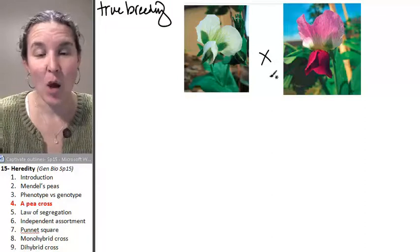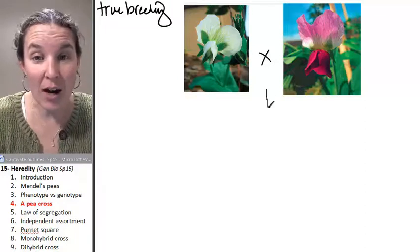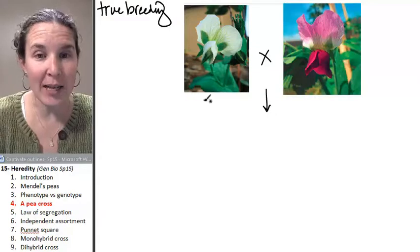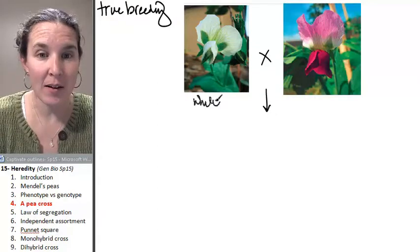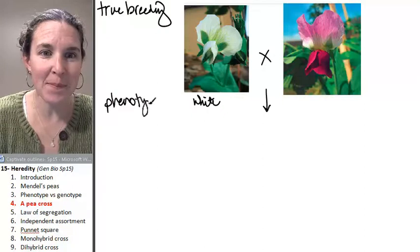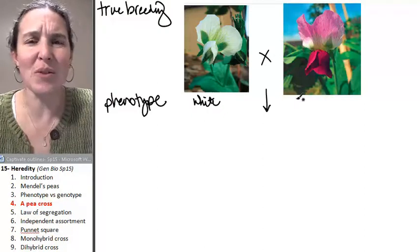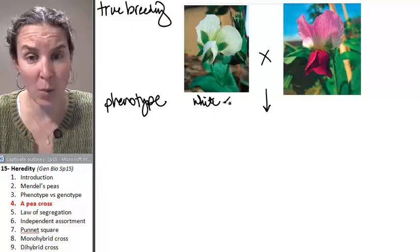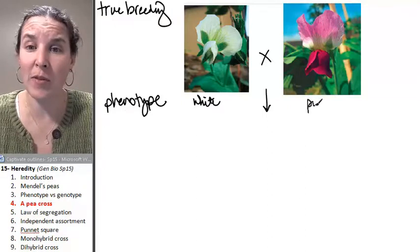He's got nothing. But he found out that when he crossed, carefully, a true breeding white plant, and this is the phenotype. Do you agree with that? He doesn't even know genotypes exist. But he does know that the phenotype is a white flower here and is a purple flower here.